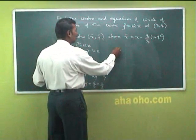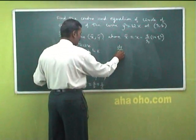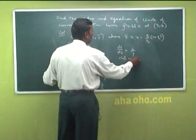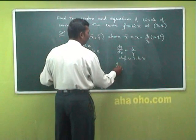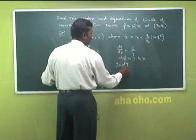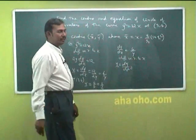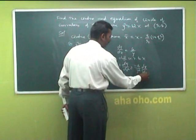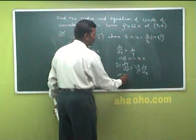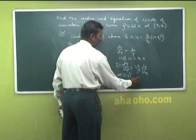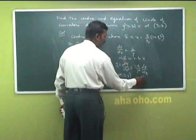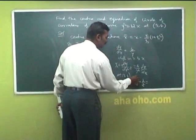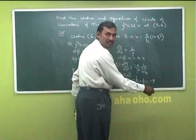Then y₂: since dy/dx = 6/y, differentiate again with respect to x. At the point (3, 4), y₂ = −6/16 · (dy/dx) = −6/16 · (3/2) = −9/16.